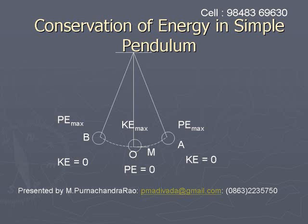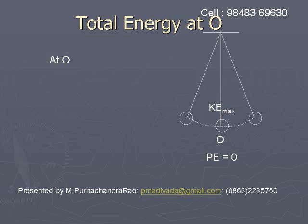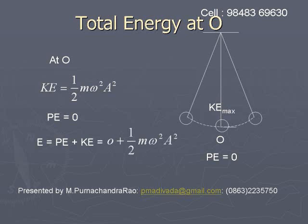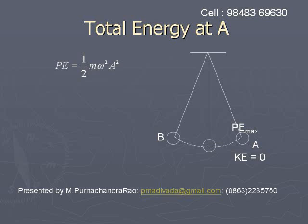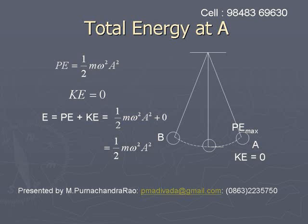The total energy is constantly equal to half m omega squared a squared. At equilibrium position O, kinetic energy is half m omega squared a squared and potential energy is zero, so total energy E equals PE plus KE equals half m omega squared a squared. At extreme position A, potential energy is half m omega squared a squared and kinetic energy is zero, so total energy is again half m omega squared a squared.